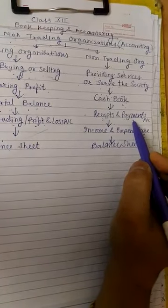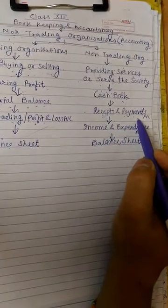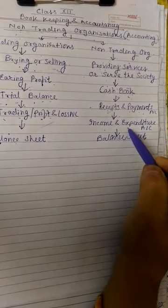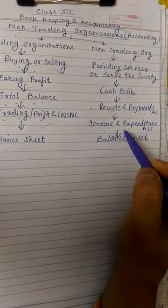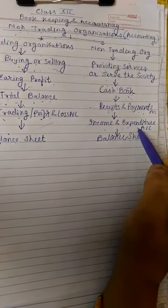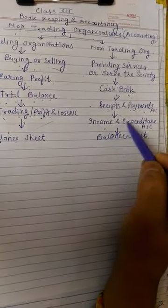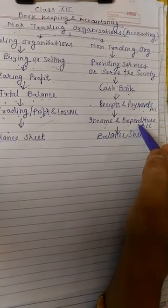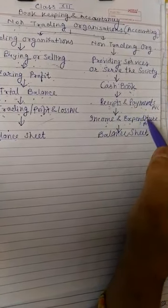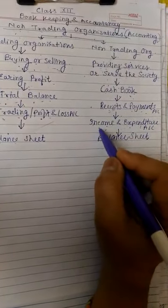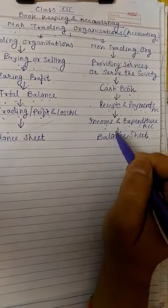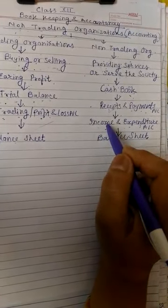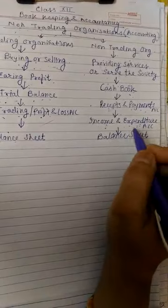And then at last, income and expenditure account is prepared which is helpful to know the excess of income over expenditure which is called surplus or excess of expenditure over income which is called deficit, by which they can know the excess of income or excess of expenditure. And at last, they also prepare their balance sheet which is a sheet of assets and liability of the organization.